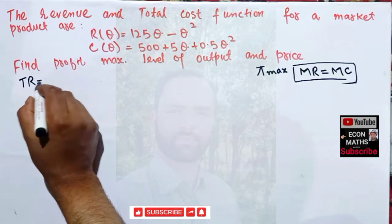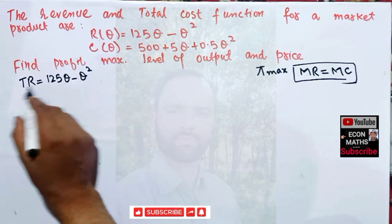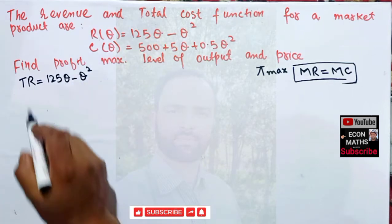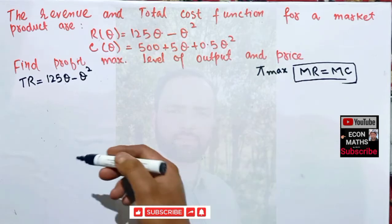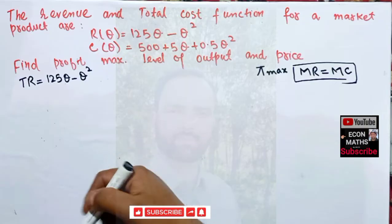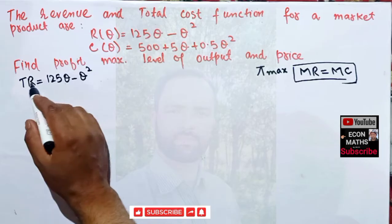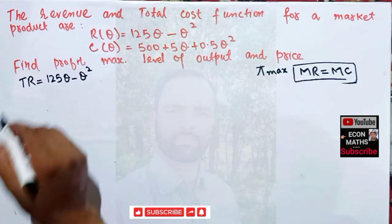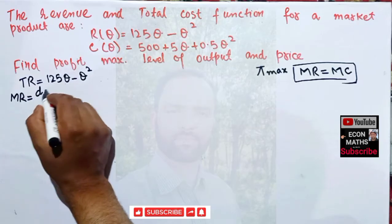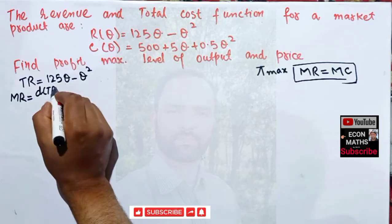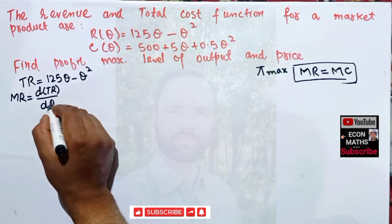We are given total revenue TR = 125Q minus Q squared. From this total revenue function we have to find marginal revenue. Marginal revenue is simply the first derivative of the total revenue function with respect to output Q.